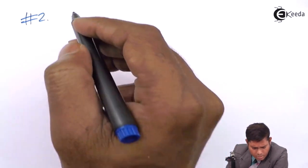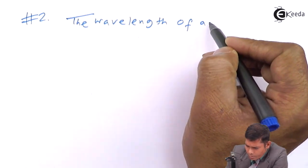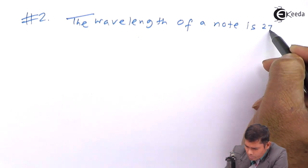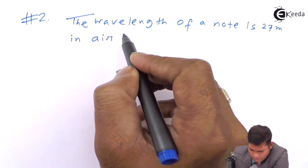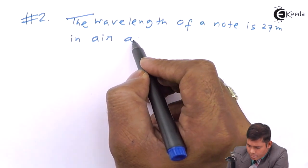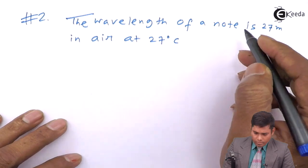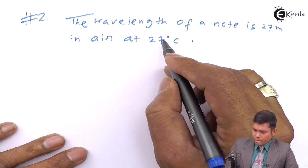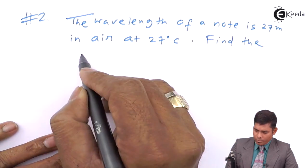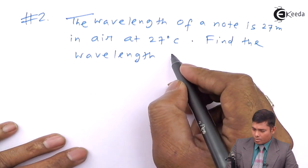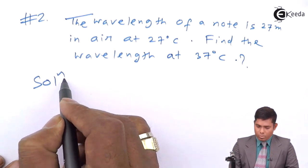The wavelength of a note is 27 meter in air at 27 degree centigrade. Now, what will be its wavelength at 37 degree centigrade? We will find the wavelength at 37 degree centigrade. This is the question and we have to solve here.